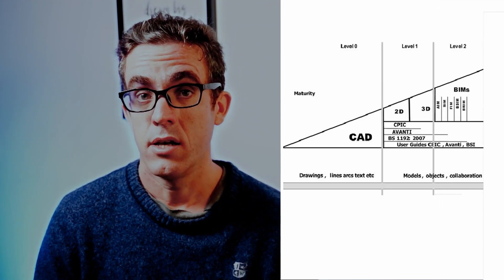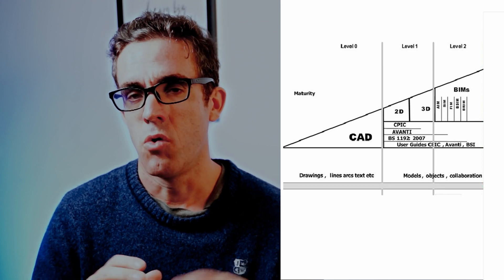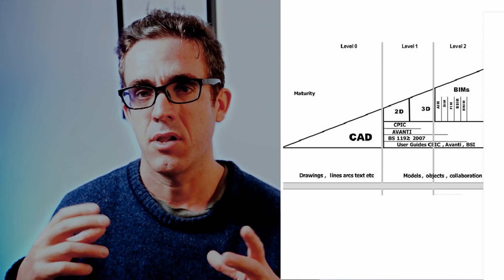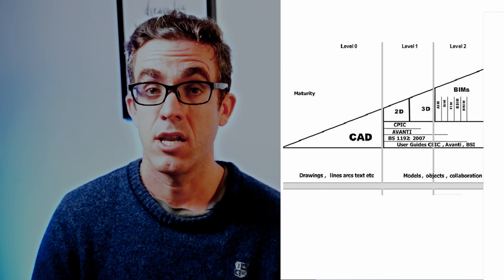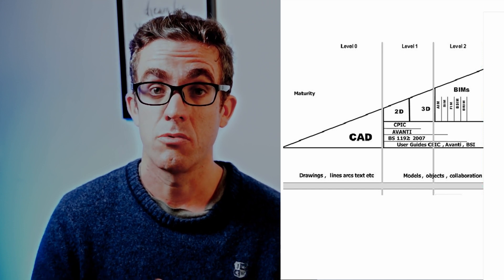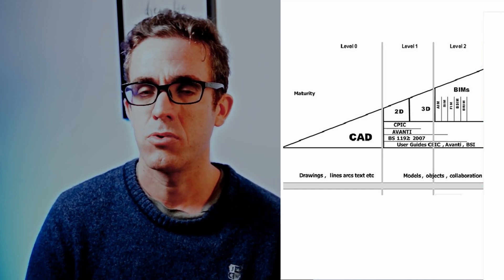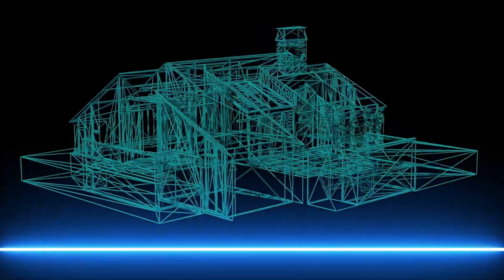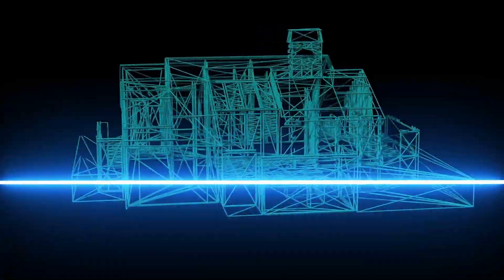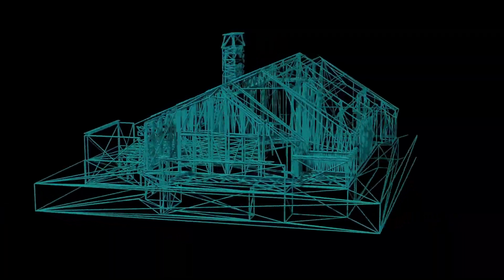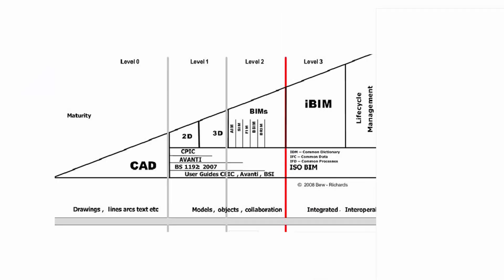Level Two is typically where most projects sit today. Level Two has more coordination back and forth. Models are typically modeled in 3D with elements at their typical size and geometry, allowing for clash detection and coordination between you, the architect, and the other services. This is where most projects sit today — at this Level Two of BIM.